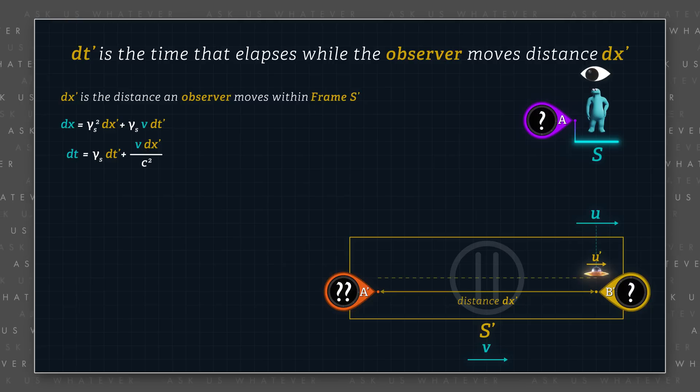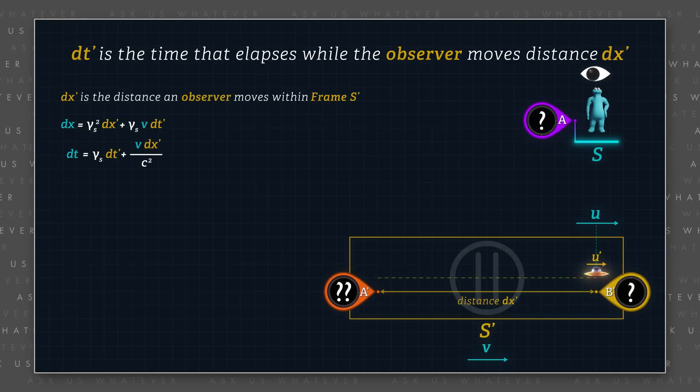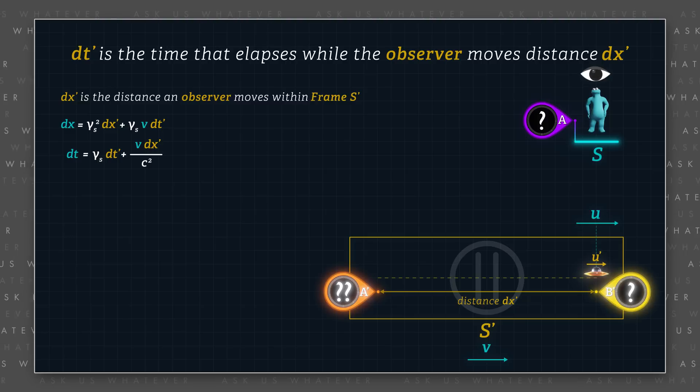which means that clock b prime will report an earlier time of day than clock a prime. Therefore, the computation of elapsed time dt prime will be affected not only by the time dilated tempo of clocks a prime and b prime, but also by the difference between the readings being displayed by clocks a prime and b prime.